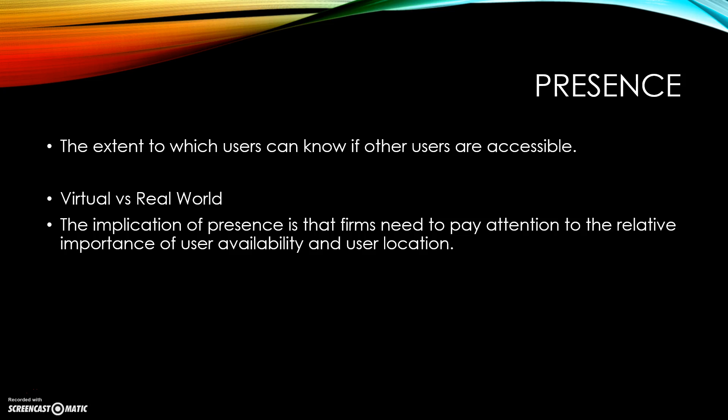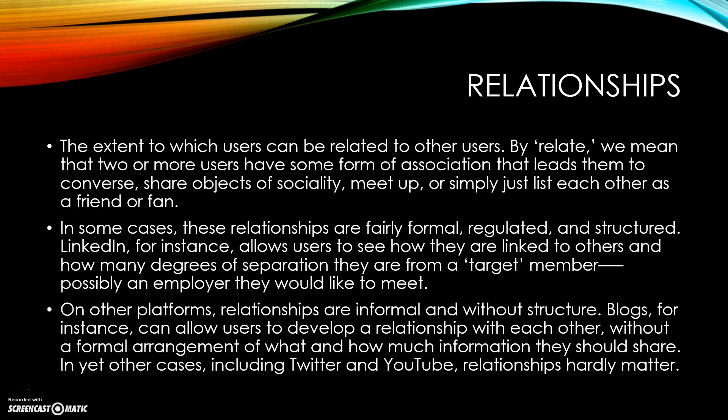The next one is presence — pretty simply, it's where users are. Something like Foursquare is very dependent on a user's location. There's also the aspect of availability: synchronous, meaning real-time such as a chat, versus asynchronous, which is not real-time — for example, responding to a Facebook post two days after it was made. As a marketer, you need to use presence to pay attention to when users are available and where they are, then customize your messages accordingly.